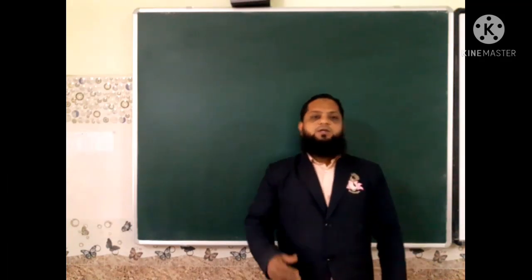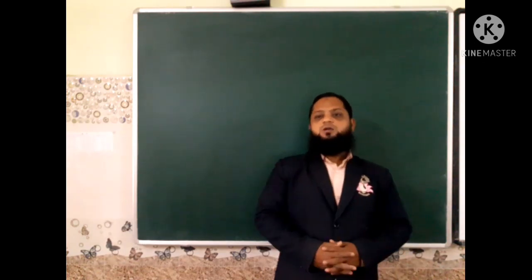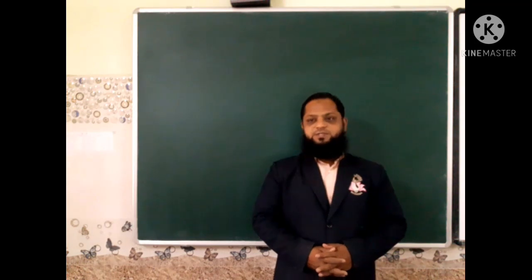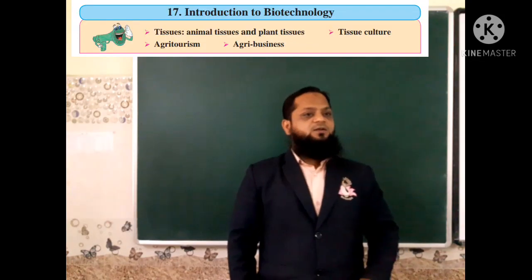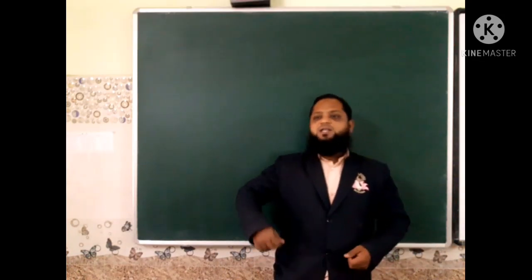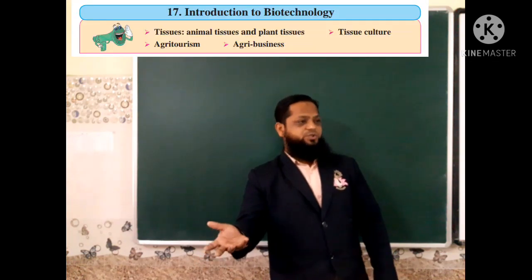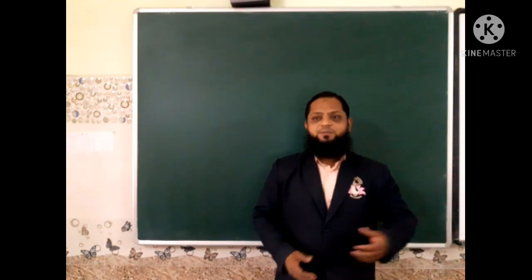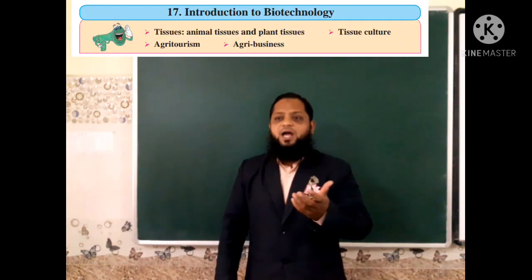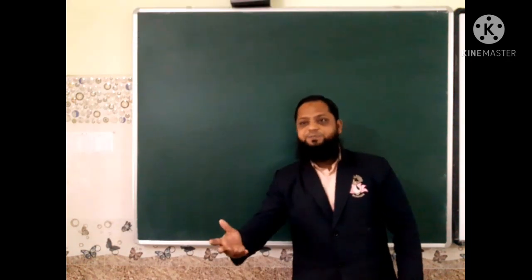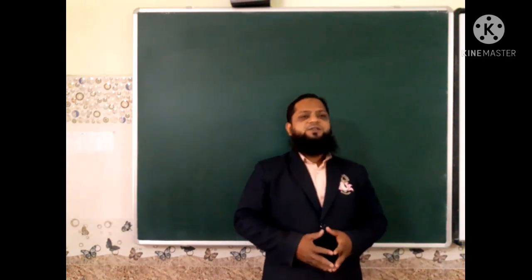Hello dear children, welcome back to the course. Today we are going to learn about chapter number 17, introduction to biotechnology. The objectives of the lesson are animal tissue and plant tissue. We are going to learn about different types of animal tissues and plant tissues, tissue culture technique, the concept of agri-tourism, and the concept of agri-business.